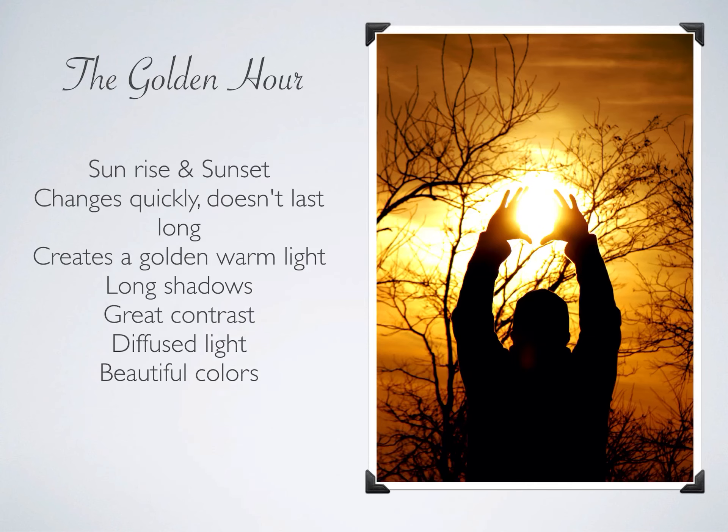The golden hour — sunrise and sunset are called the golden hour. It changes quickly and doesn't last long. If you've ever watched a sunset, you close your eyes and open them back up and the sun's in a totally different place and everything looks different. It creates a warm golden light, hence the name golden hour. It creates long shadows, great contrast, diffused lighting, and beautiful colors.